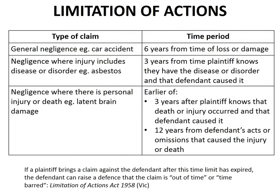As you should remember from the previous video on key concepts of civil law, Parliament has passed laws which specify the time within which a plaintiff may bring a civil action against a defendant. These time limits vary depending on the type of civil action. In Victoria, the law that sets out these time limits is the Limitation of Actions Act 1958. If a plaintiff brings a civil claim after the applicable time limit has expired, the defendant can raise a defence that the claim is out of time or time-barred. The reasons for these time limitations are to provide certainty for defendants, to address the problem that evidence may become less reliable over time, and because social cohesion requires that disputes are resolved as quickly as possible.